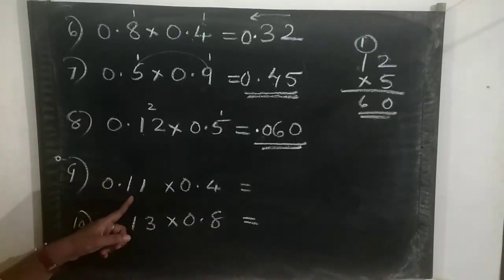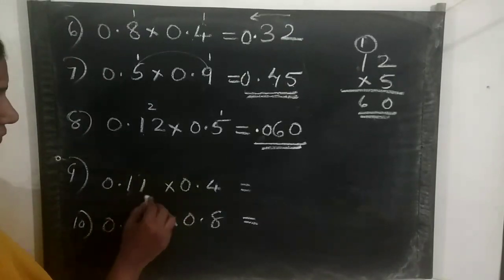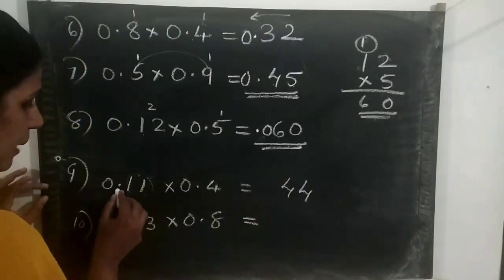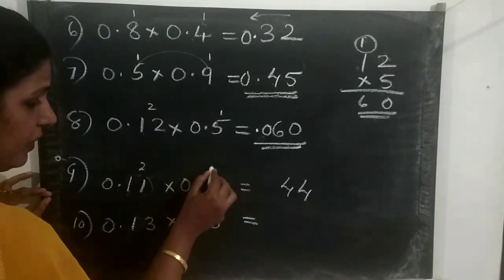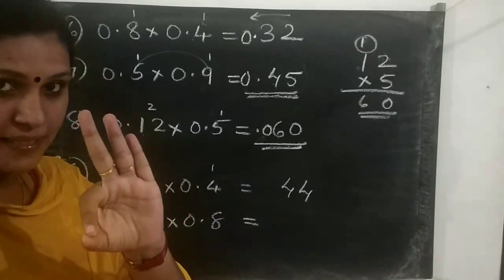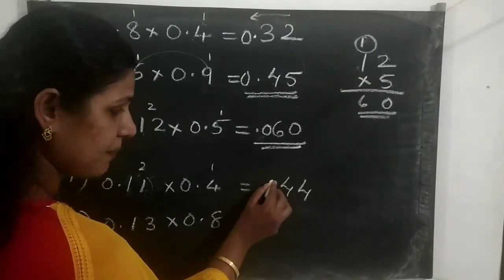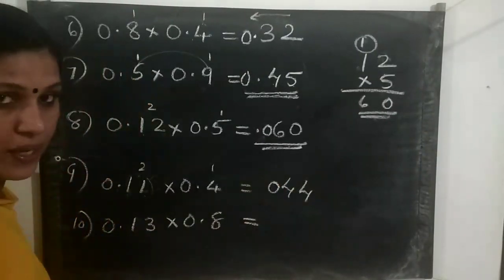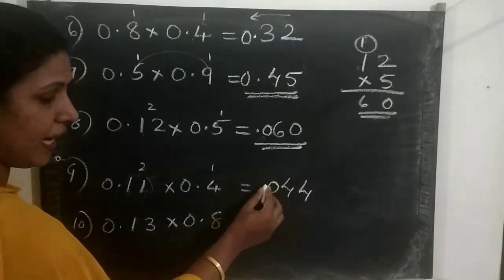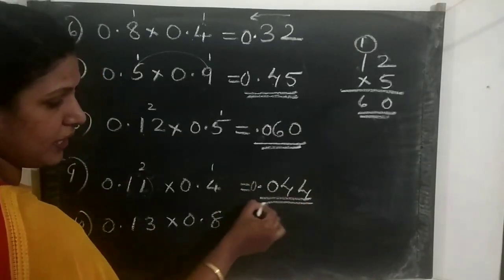Next is 0.11 into 0.4. That is 11 into 4, which equals 44. Then count the places — in 0.11 there are 2 places, and in 0.4 there is 1 place. Total: 2 plus 1 equals 3 places. We only have 2 digits in 44, so we put an extra 0 in front. Now we have 3 places; count 1, 2, 3 and put the point. The answer is 0.044.